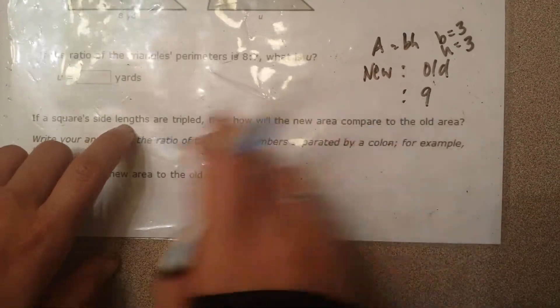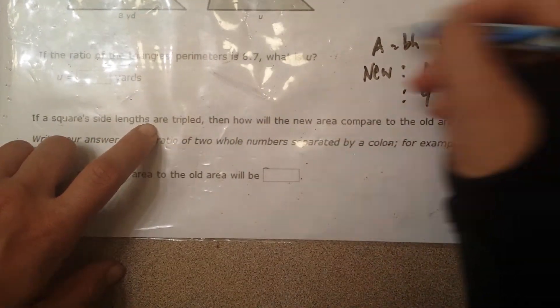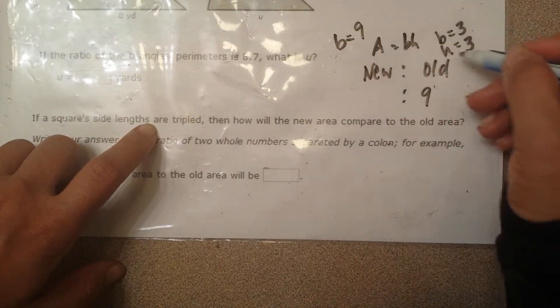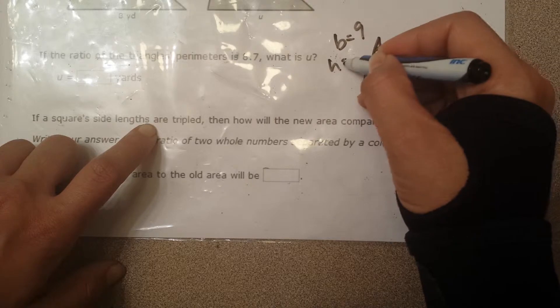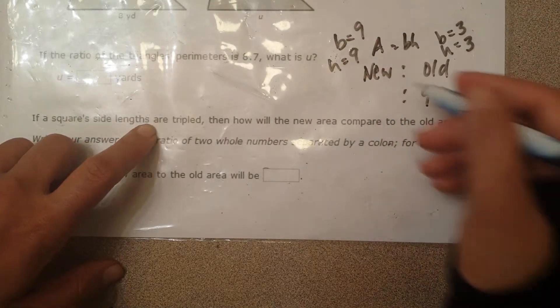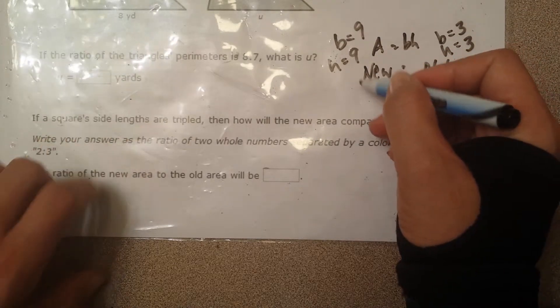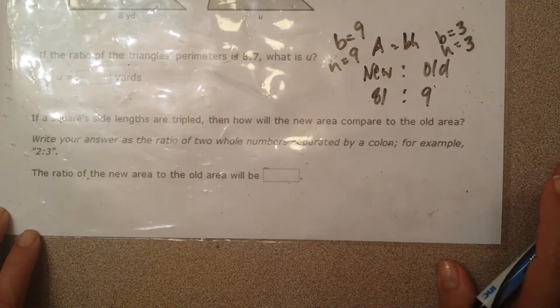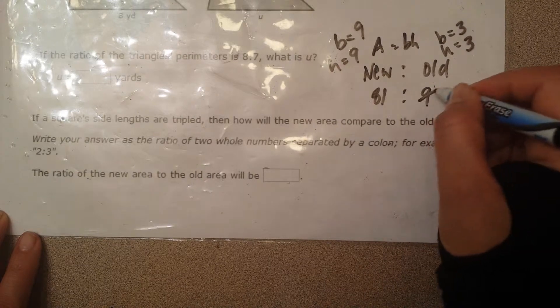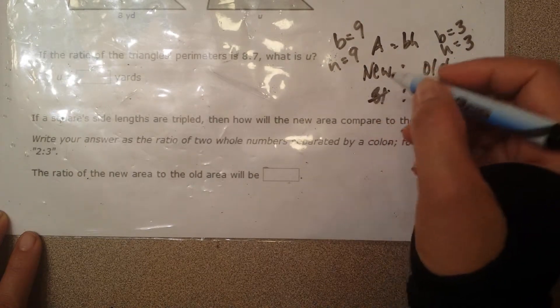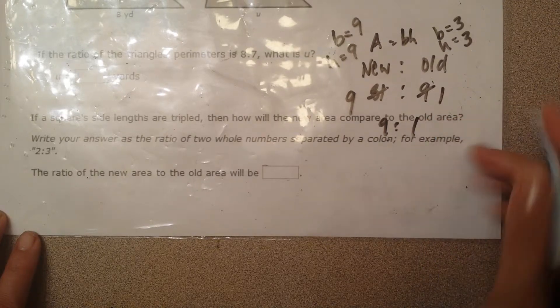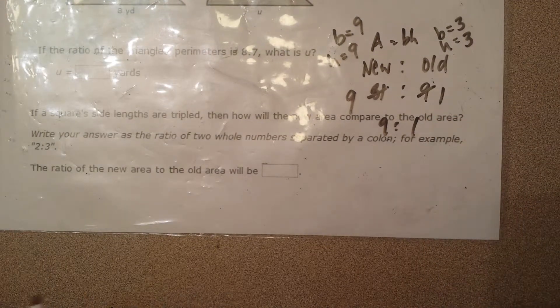Now to find the new area, I'm going to triple the length. So base, I'm going to triple the length. So 3 times 3 is going to give me 9. And I'm going to triple the height. So that's also going to give me 9. So to find the area of the new one is base times height which is 9 times 9 which is going to be 81. Go ahead and simplify what goes into both of those. Well, 9 goes into 9 one time and 9 goes into 81 nine times. So your ratio is still going to be 9 to 1.